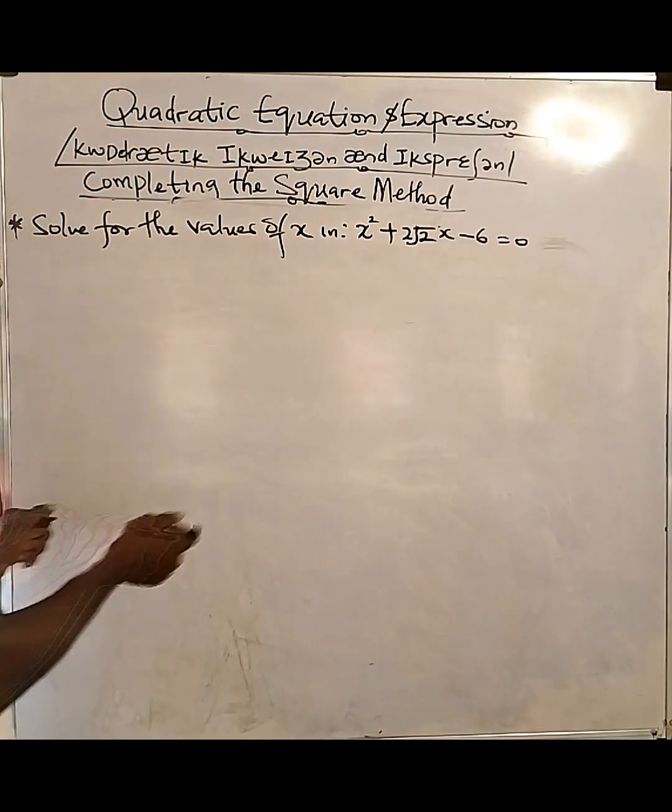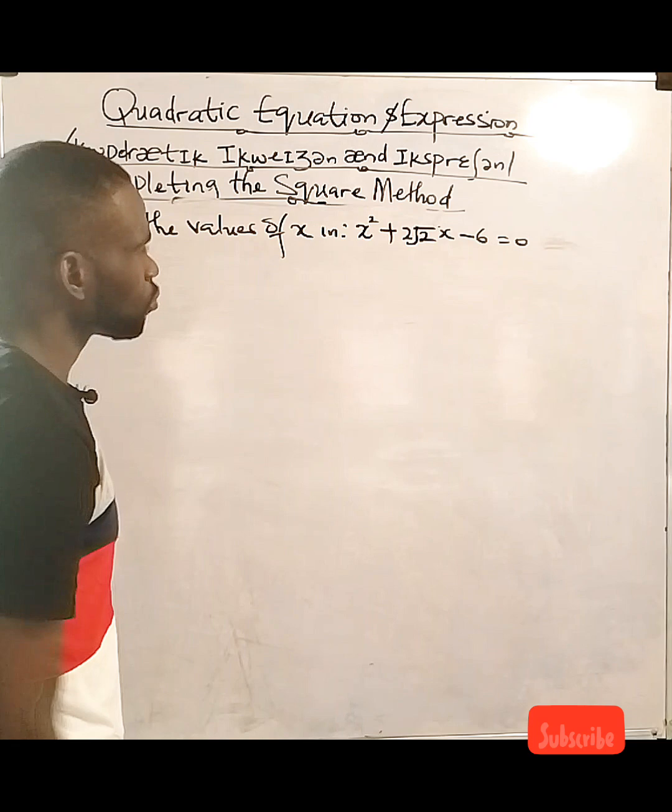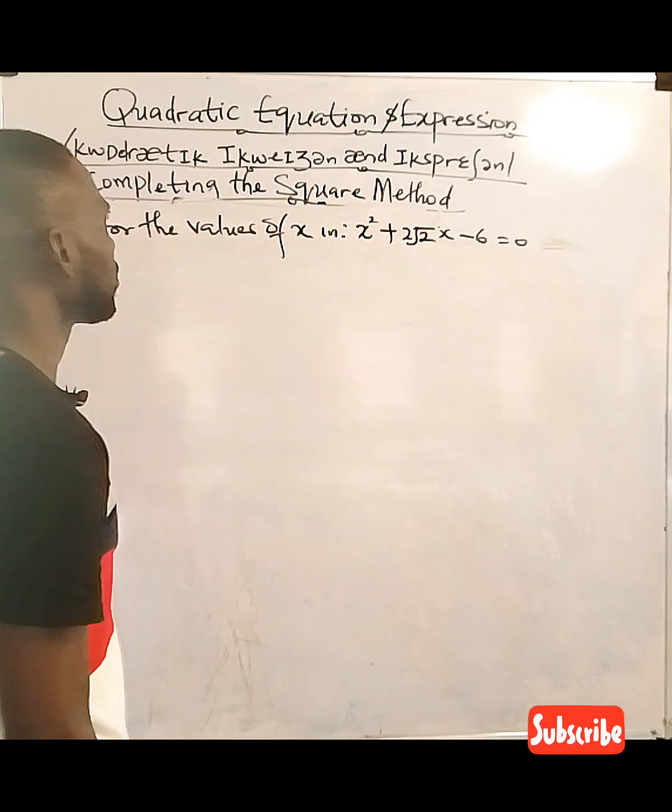Look at what we have. We are asked to solve for the values of x in x squared plus 2 root 2 x minus 6 is equal to 0.